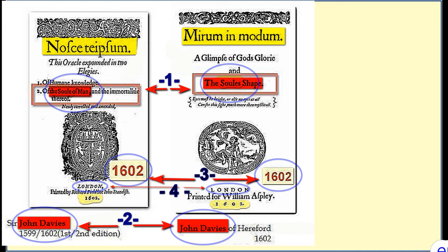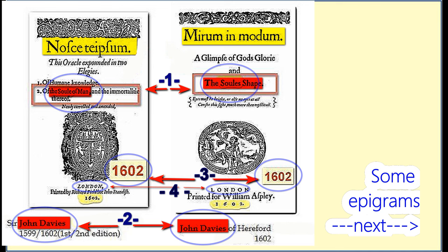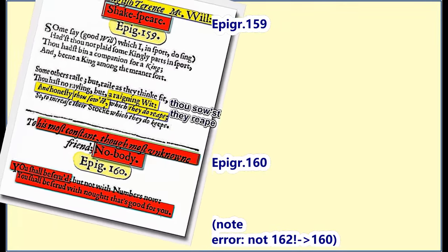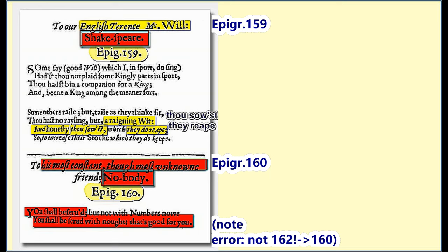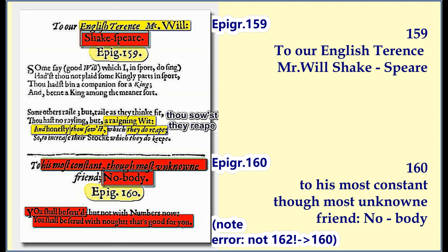The video moves on to examine some epigrams attributed to John Davis — think of epigrams as short, witty sayings or poems, kind of like literary tweets. One of these epigrams, number 159, from a collection called Scourge of Folly, actually mentions Master William Shakespeare by name, praising his wit and honesty. So there's a direct link — that seems like a pretty big clue. But there's more to it than meets the eye.